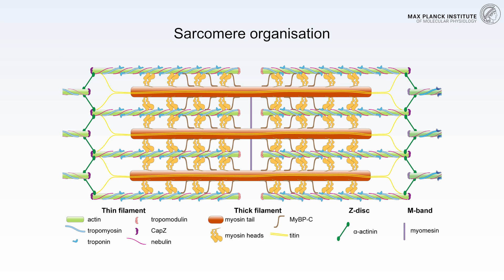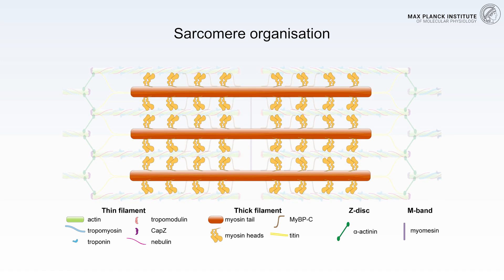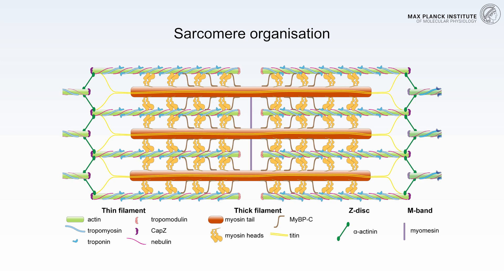Here is a schematic drawing of the sarcomere. You can find the thin filaments, mainly made of actin, and thick filaments, mainly made of myosin. The sliding between these two types of filaments leads to the shortening of the overall length of the sarcomere, which eventually leads to muscle contraction.